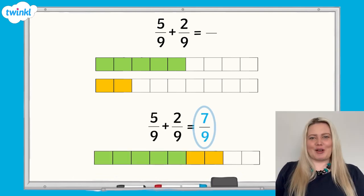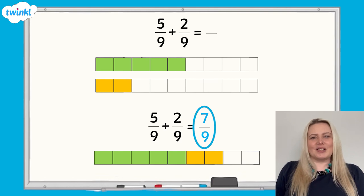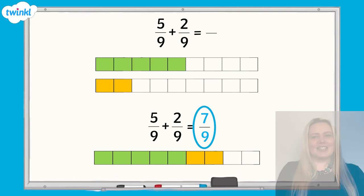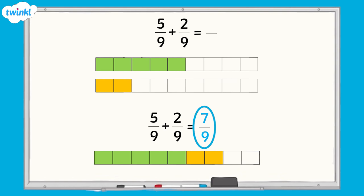What do you notice about the fraction in the answer? What happens to the denominator? The denominator has remained the same — nine — and the numerator is the total of the numerators in the calculation.